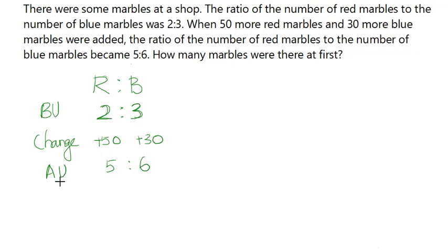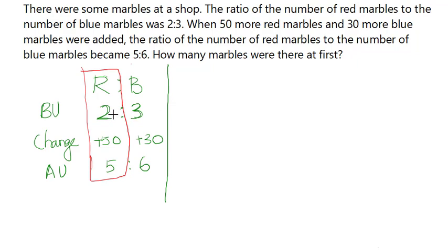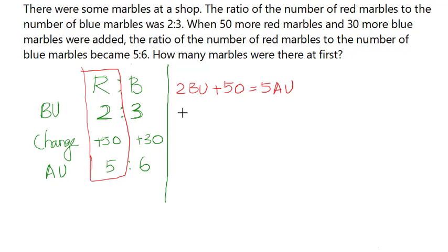The reason I'm labeling these as 'before units' and 'after units' is that the size of the before units are the same as each other, and the size of the after units are the same as each other, but the size of a before unit and an after unit are not the same. For the red marbles: 2 before units plus 50 equals 5 after units. For the blue marbles: 3 before units plus 30 equals 6 after units.